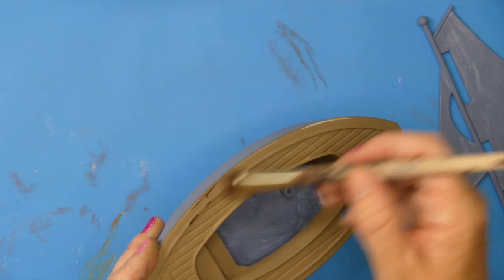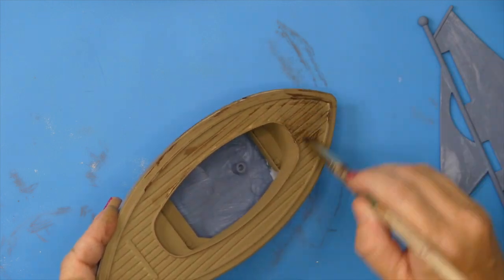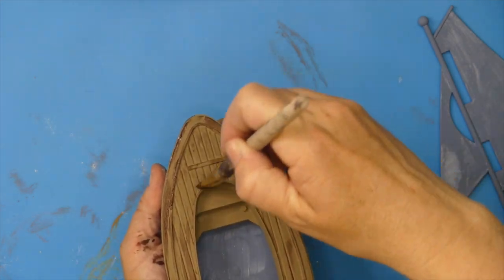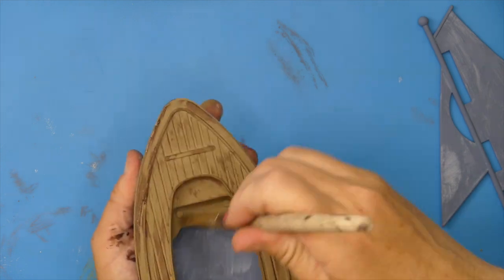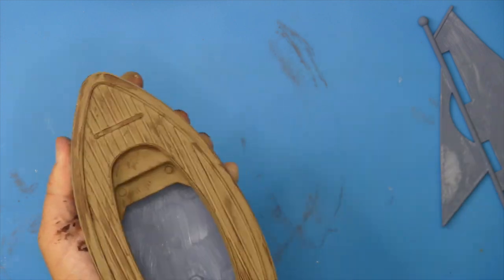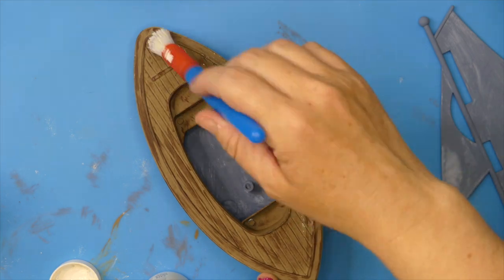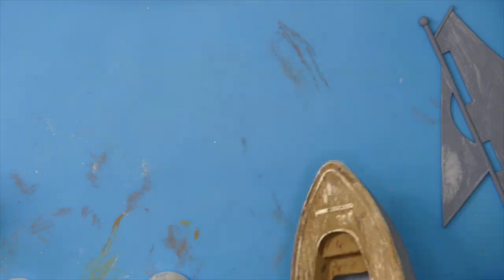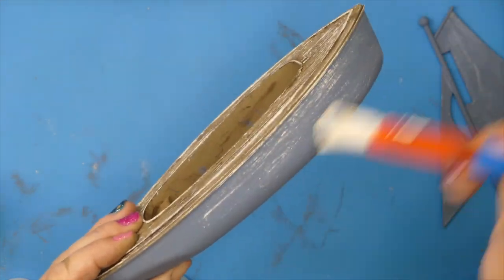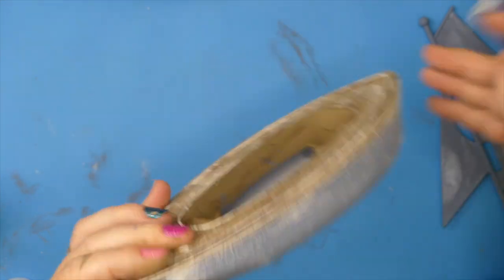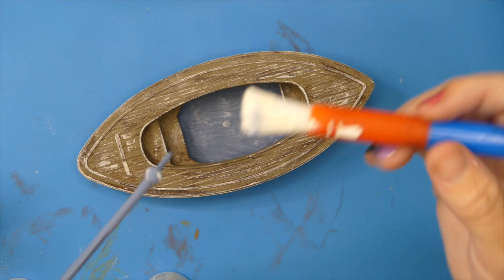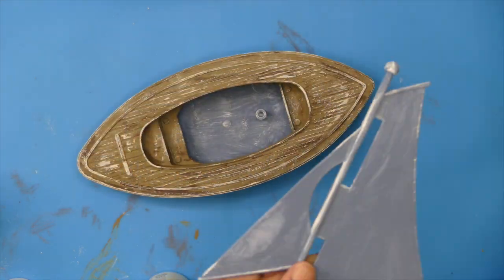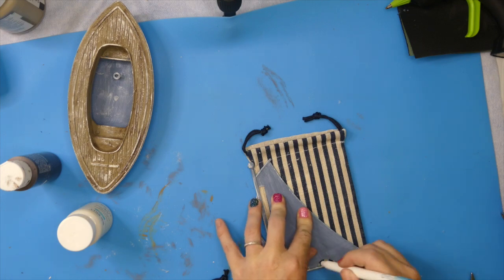Now I'm dry brushing some burnt umber from Apple Barrel to give it that wood look and make it look like it's been sitting out in the sun and sea salty air. I also dry brushed it using Waverly chalk paint ivory to give it that nice distressed look. Even though these are small home decor, I still wanted them to look as realistic as possible. I'm also doing that to the sail and painted it with the same blue.